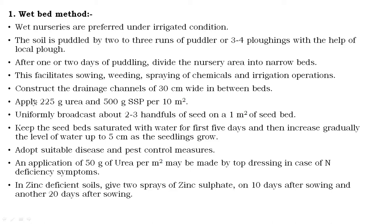Apply two to five grams of urea as a source of nitrogen and 500 grams of single superphosphate per 10 meter square. This is recommended only for 10 meter square. Uniformly broadcast two to three handfuls of seeds over the seed bed. After that, keep the seed bed or nursery saturated with water for the first five days to facilitate easy sprouting or germination of the seeds. Then gradually increase the level of water up to five centimeters, which is the recommended water level for rice nurseries, as maintaining water at five centimeters allows seedlings to grow very well.